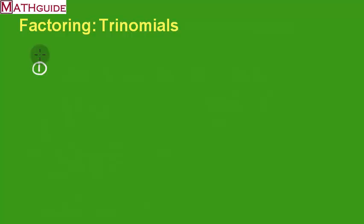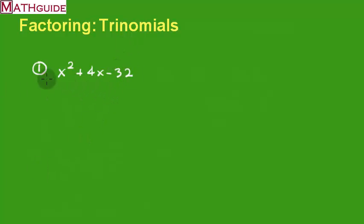Here's an example: x squared plus 4x minus 32. Now there is a special technique for factoring this. The first thing I always do is look to see if these three terms have something in common — and no, they do not. So since they have nothing in common, we're going to use a special type of factoring.